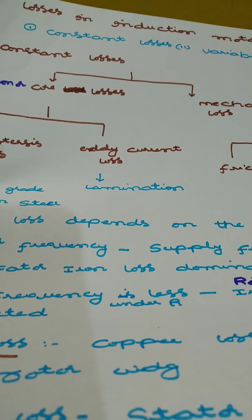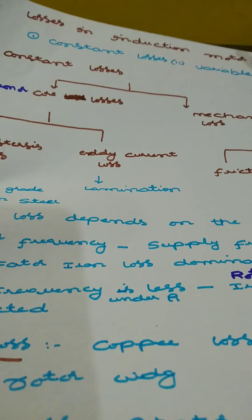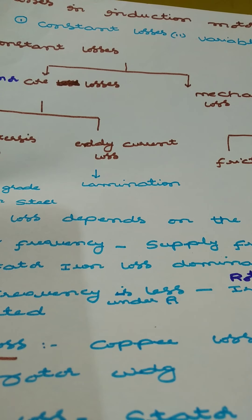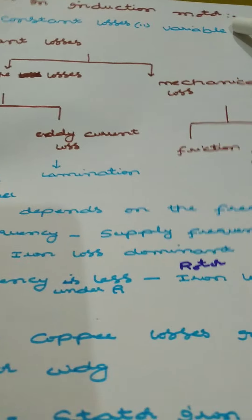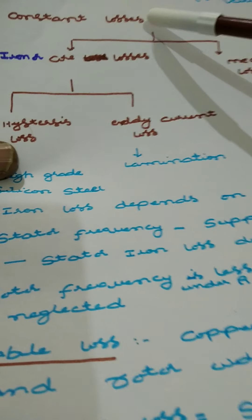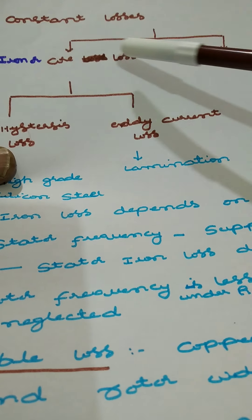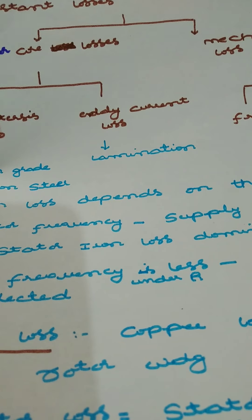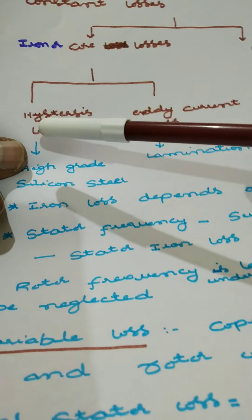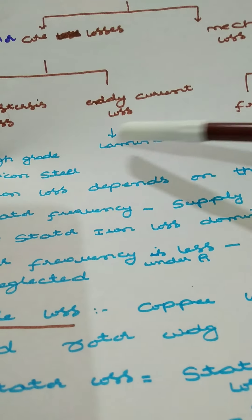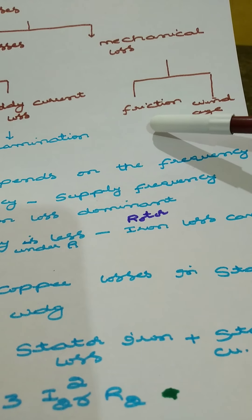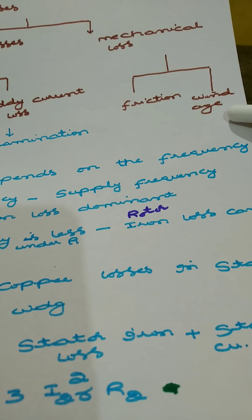Today we shall discuss losses in an induction motor. Losses can be divided into two parts: constant losses and variable losses. Constant losses can be further divided into iron or core losses and mechanical losses. Core loss can be divided into two parts: hysteresis loss and eddy current loss. Mechanical losses consist of friction losses and windage losses.